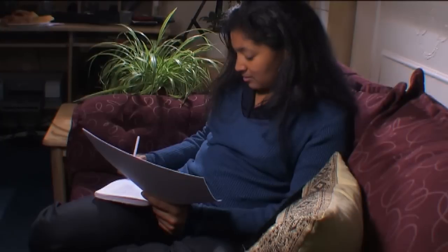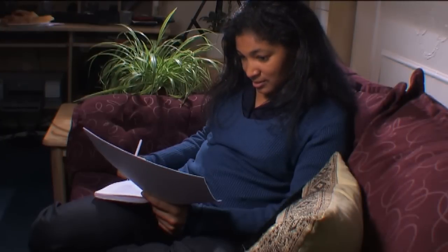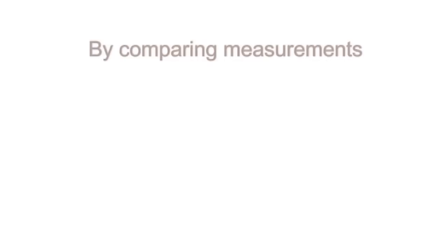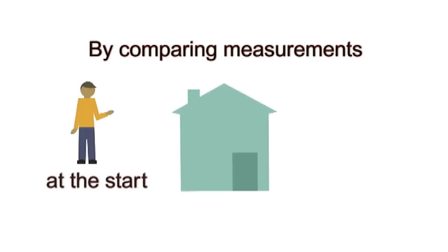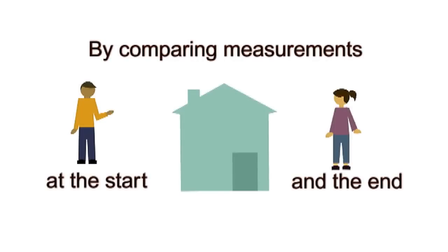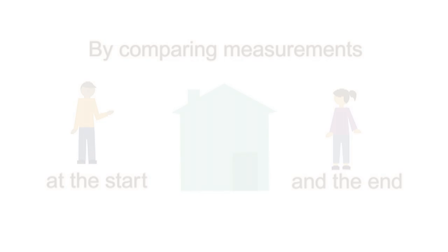By measuring, you'll see first-hand where your biggest impacts are. You'll be able to see the environmental impacts of your various behaviours and be able to choose appropriate solutions to bring about changes to reduce those impacts. Throughout the ECO Teams process, by being able to compare the measurements you make at the beginning of the programme with measurements later on, that'll give you proof that the changes you're making to your life really are making a difference.